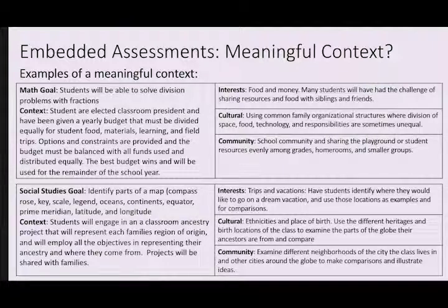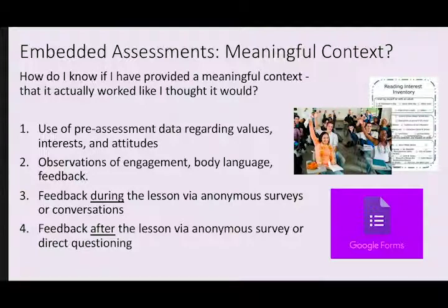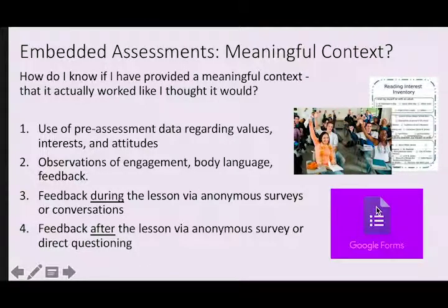Ultimately, from these options, I might choose the ancestry model: students make a map of their place of origin with a list of things they have to include in the key, and then we find some way to represent it globally, where they will have to use latitude, longitude, prime meridian, and equator. Now, suppose I think about those things — that's really a planning exercise. I think I made a meaningful context because I used my student assets, but the big question is how do I know if it actually worked? To assess whether or not it's effective, I have to start making observations of their level of engagement, their body language, how they're talking, what they're talking about, or asking them directly as a class or individually. That turns into feedback during the lesson via anonymous surveys through something like Google Forms or conversations.